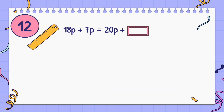18p plus 7p is equal to 20p plus blank. Answer: 5p.